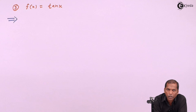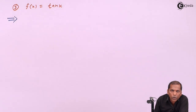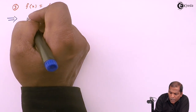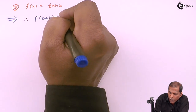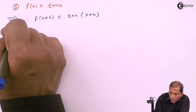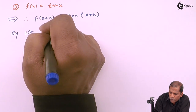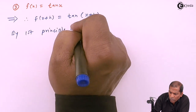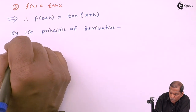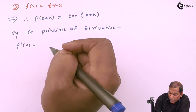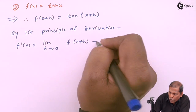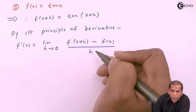Hello friends. Now we see the number three function: f(x) is equal to tan(x), from the chapter on differentiation. Since f(x) = tan(x), the next step is f(x + h) = tan(x + h). Then, by the first principle of derivative, we have f'(x) is equal to limit h tends to zero of f(x + h) minus f(x) upon h.